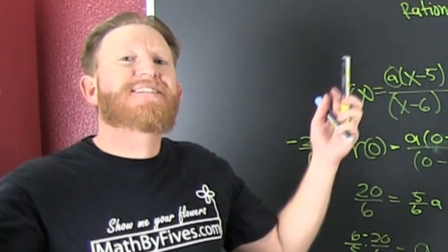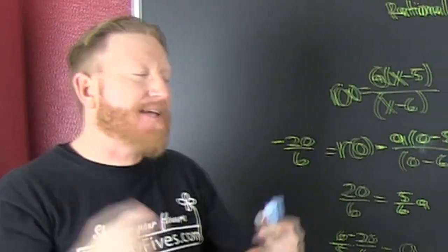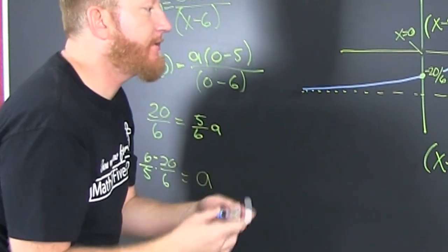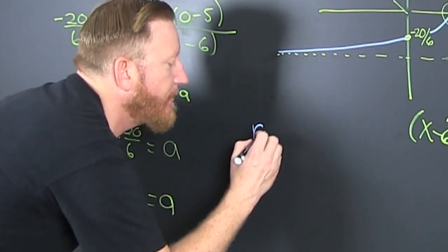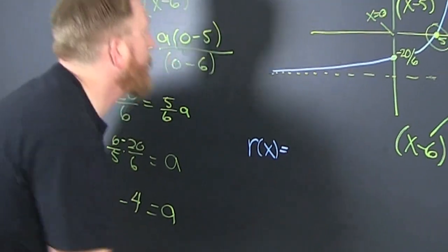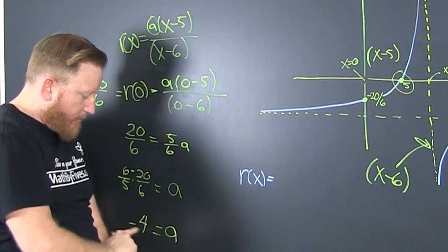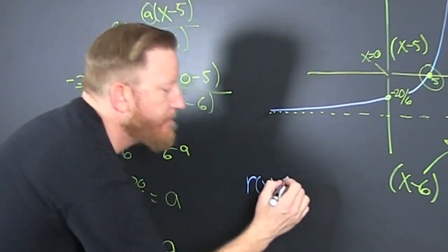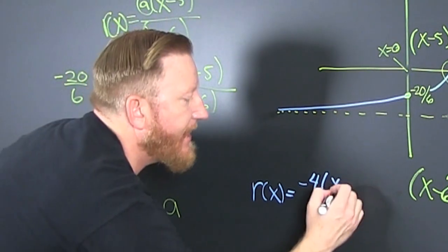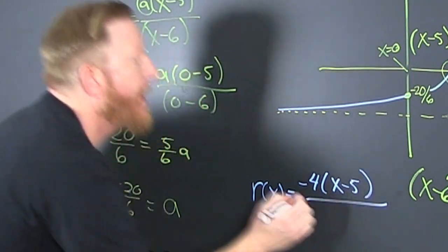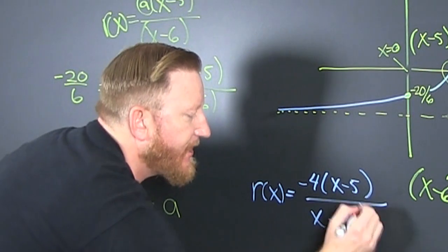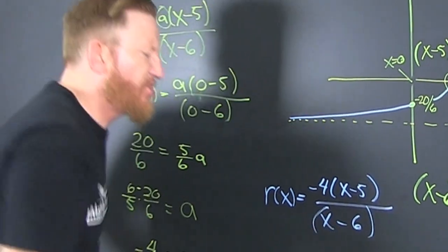Let's put it all together in this nice tight package. r of x equals — what was my A? My A was minus 4. So that's minus 4 times x minus 5, all divided by x minus 6. And the whole thing is sick!